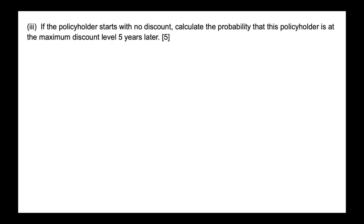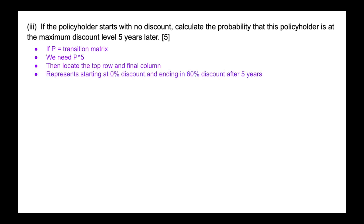Part three of the question says, if the policy holder starts with no discount, calculate the probability that this policy holder is at the maximum discount level five years later. So again, if P is equal to our transitional matrix, essentially we need P to the power of five. Now then what we have that we can look at the top row and the final column, and that's going to give us our answer. This represents starting at 0% discount and ending in 60% discount after the five years.